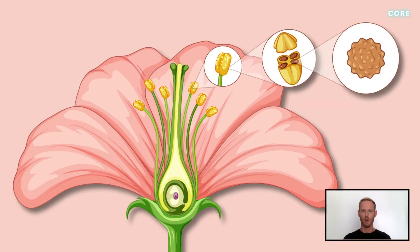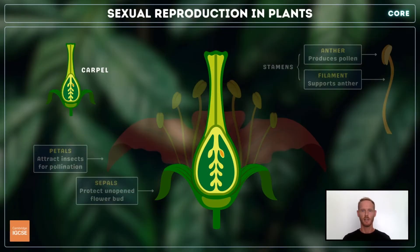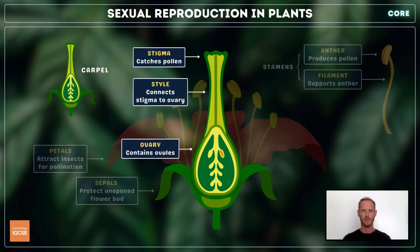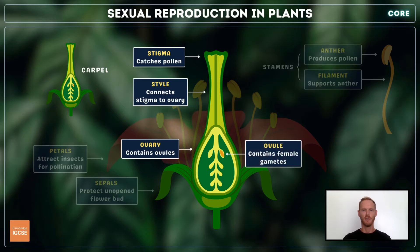When the anther is ripe, the sack splits open, exposing the grains. The female reproductive organs are called carpels. Each carpel consists of an ovary, a style, and a stigma. The stigma is a sticky surface that catches pollen during pollination, and the style connects the stigma to the ovary, which contains one or more ovules. Ovules contain the female sex cells. They develop into seeds when fertilised, and the ovary that surrounds them becomes a fruit.